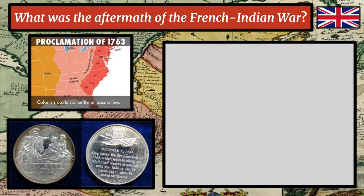Our first lesson slide question today is: what was the aftermath of the French and Indian War? We've talked about the causes and effects of the French and Indian War — mainly that the British gained control of all of North America east of the Mississippi River, that French-speaking people in Canada were allowed to keep their language and culture, and that Native Americans who sided with the French essentially chose the wrong side and now had to deal with the British. That's really where this story begins.